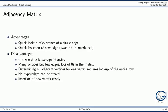The adjacency matrix has advantages and disadvantages. From a runtime perspective, we can quickly look up the existence of a single edge, and for existing nodes, we can quickly insert a new edge by swapping the bit in the matrix cell. However, the matrix is very storage intensive. If there are many vertices but few edges, the matrix is sparse with lots of zeros. Determining all adjacent vertices for one vertex requires looking up the entire row. We cannot store hyperedges, and inserting a new vertex is costly because we must add a new row and a new column.